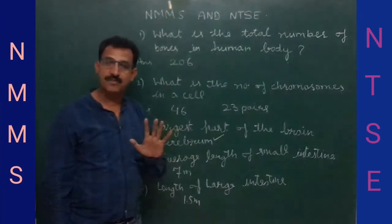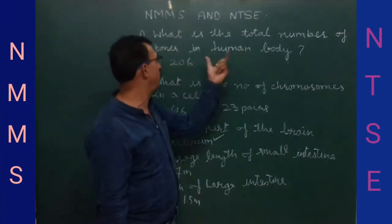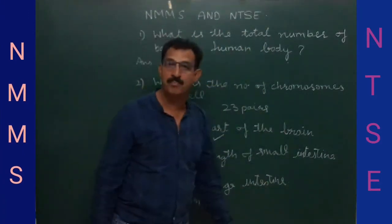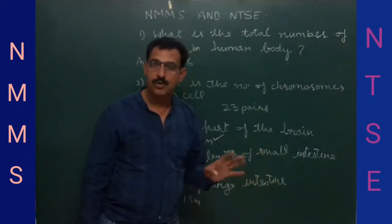Today, let's have 5 questions in science. So, the first question is, what is the total number of bones in human body? In human body, 206 bones can be found.